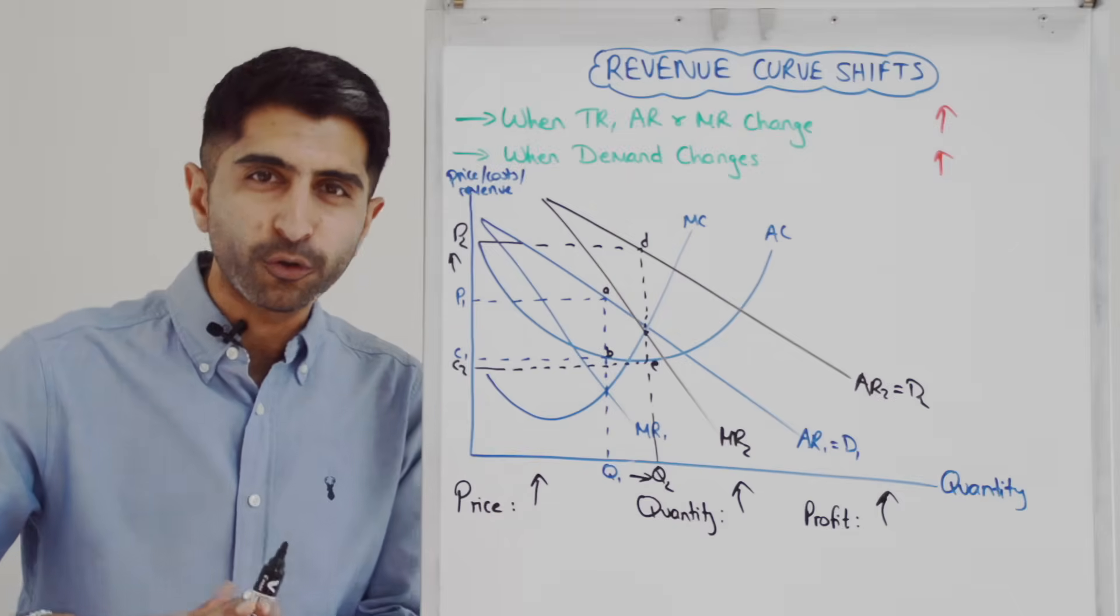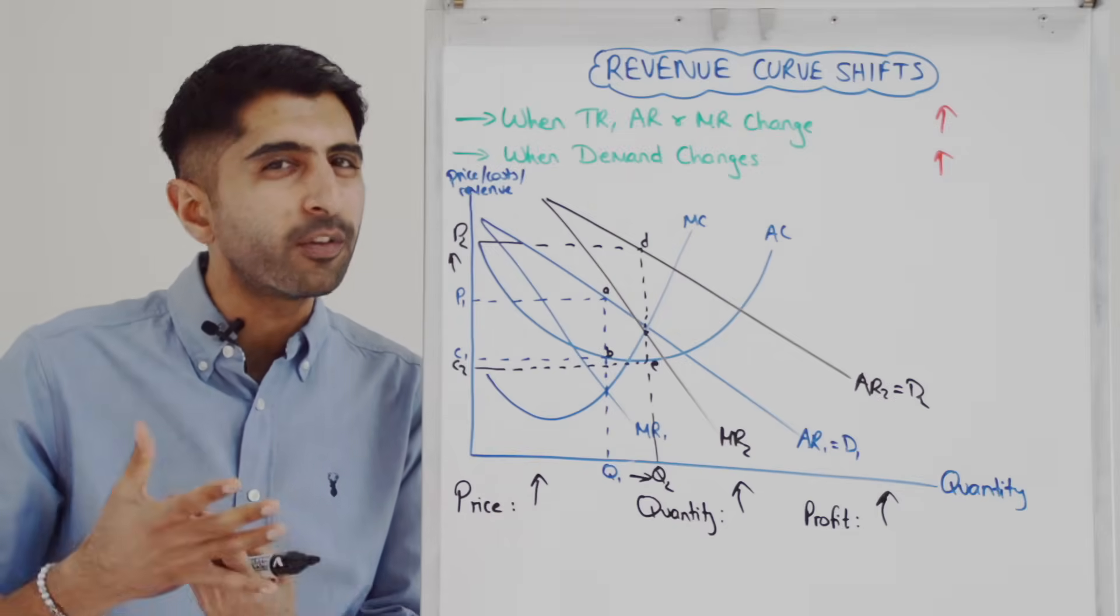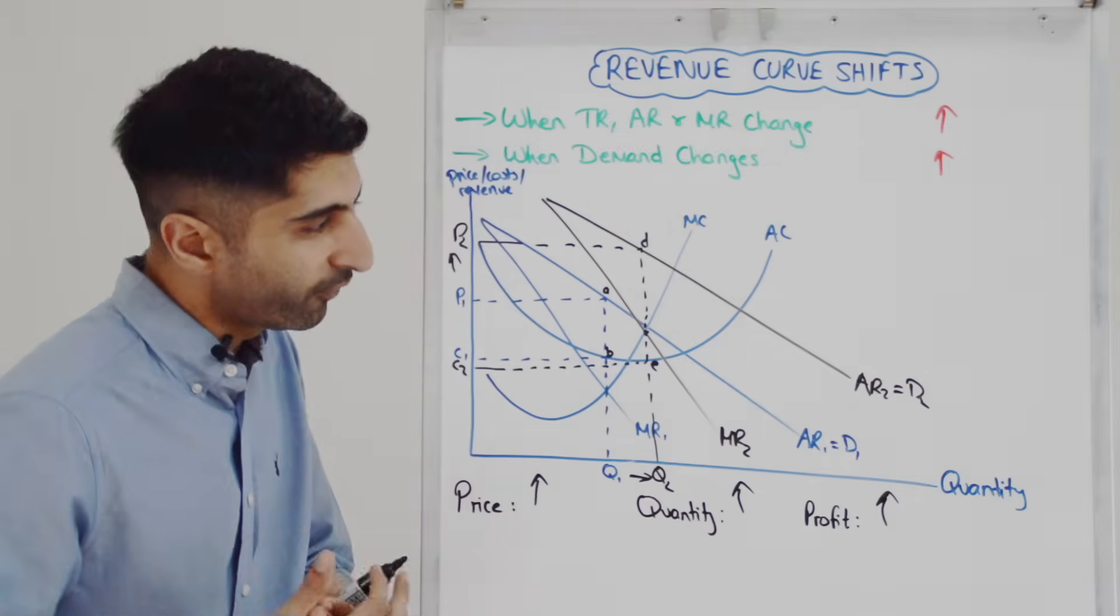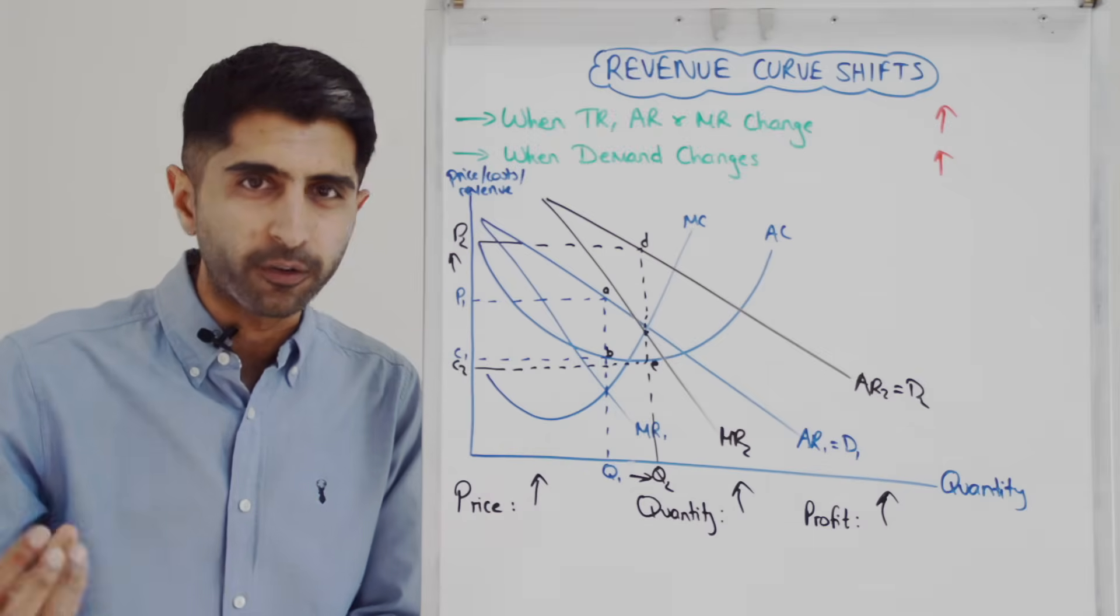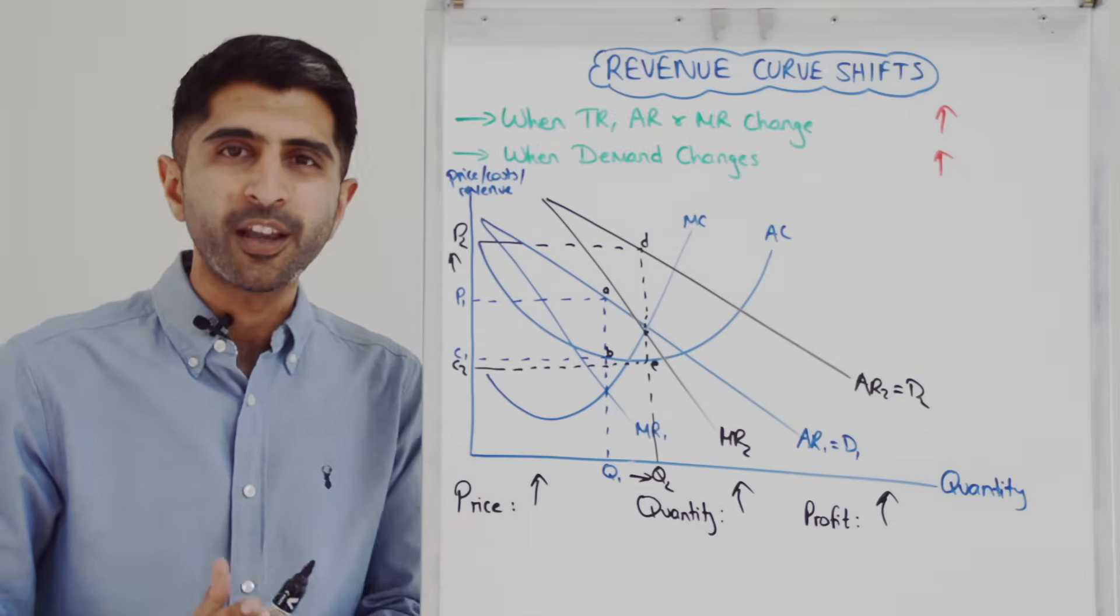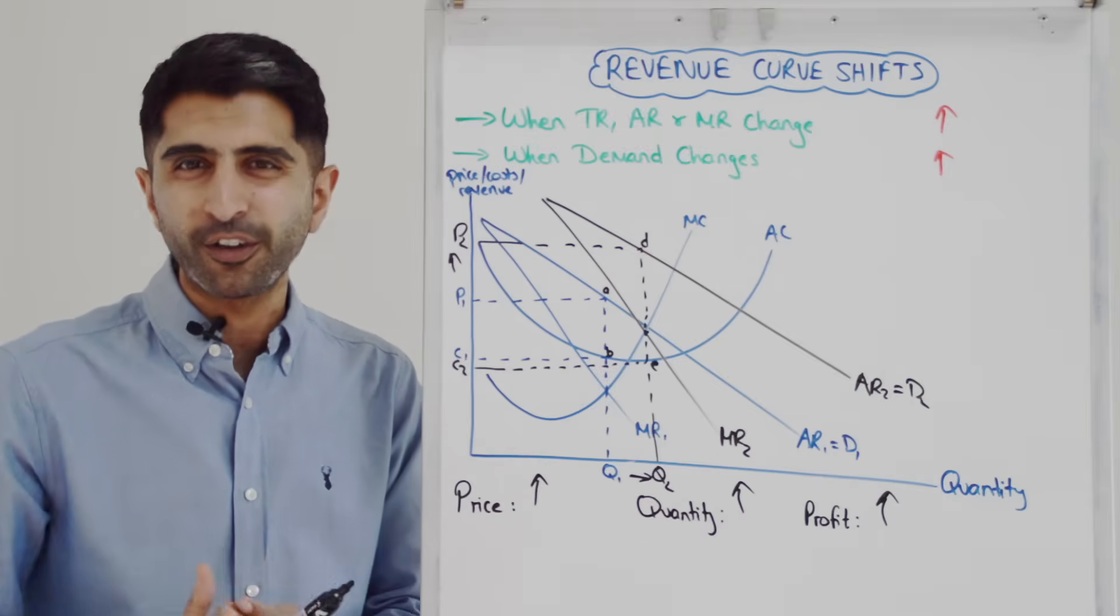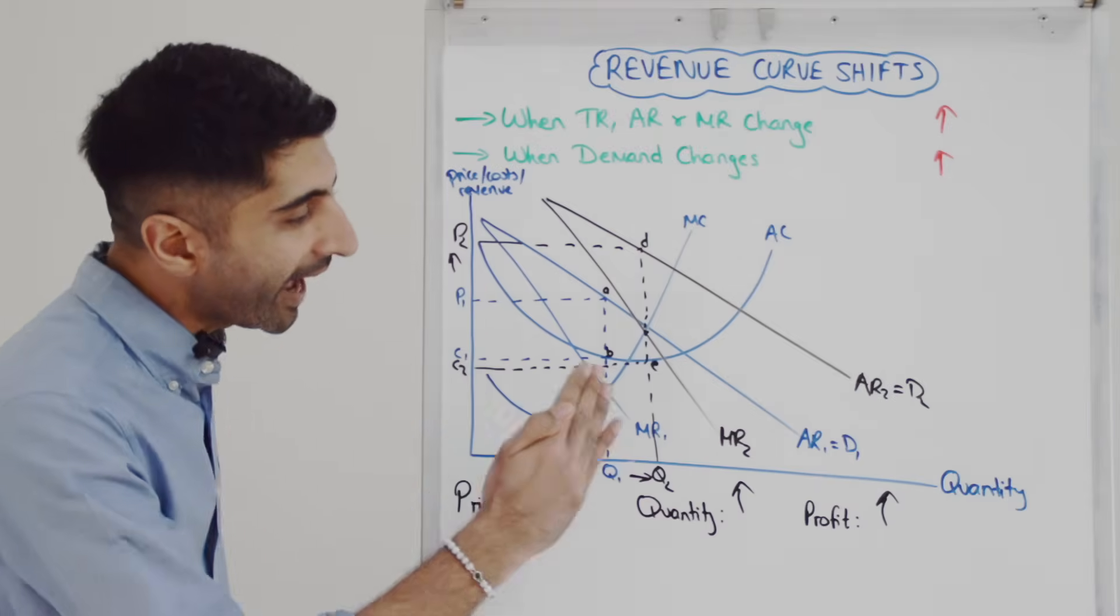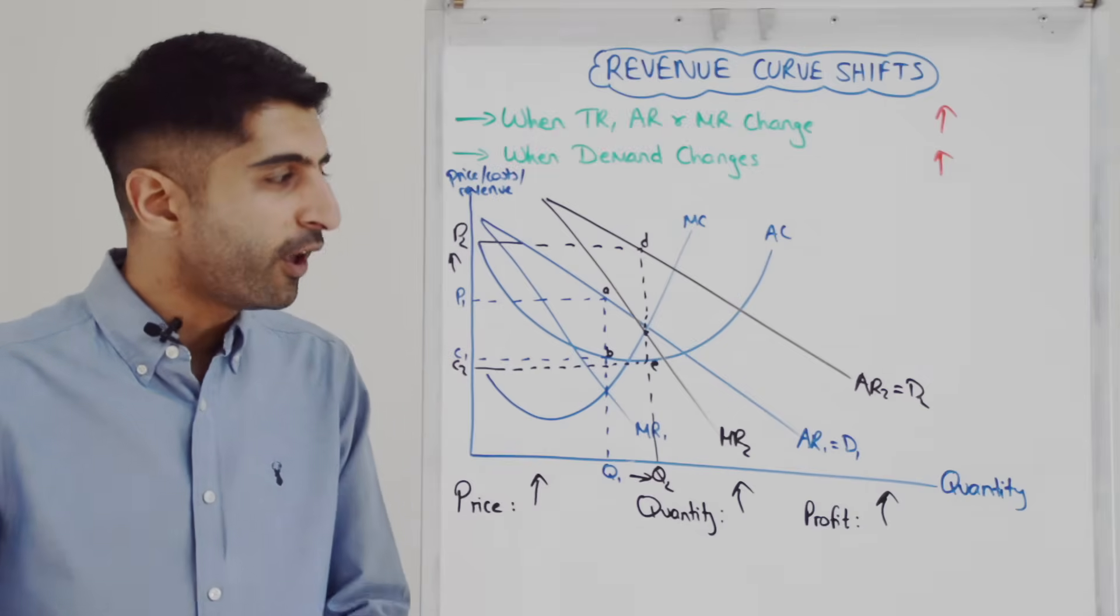We don't need to worry about total revenue. A bit like on the last video, we don't really draw TR curves. Of course, if you're drawing TR, you can apply the same concept of shifting there, so shifting upwards with total revenue curves, but we tend not to draw it. Just like with cost curves, we don't tend to draw TC. It's AR and MR that we tend to focus on with the shift.